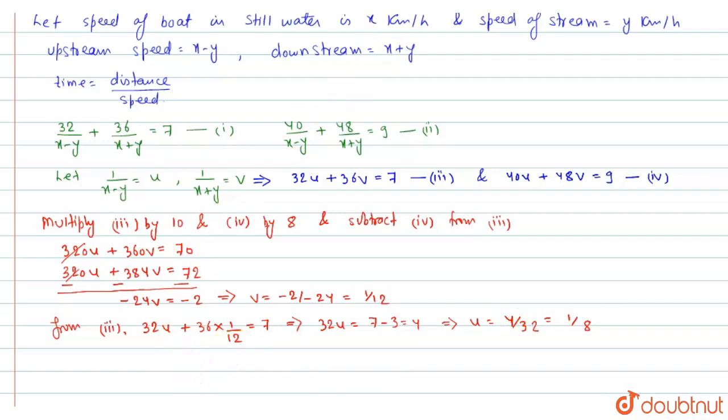Now we need to solve for x and y. So from our assumption we get x minus y is equal to 1 by u that is 8, that will be our equation number 5.